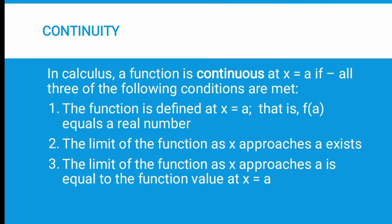So what is continuity in calculus? In calculus, a function is continuous at x equals a if all three of the following conditions are met. First, the function is defined at x equals a — that is, f(a) equals a real number. Second, the limit of the function as x approaches a exists. Third, the limit of the function as x approaches a equals the function value at x equals a.